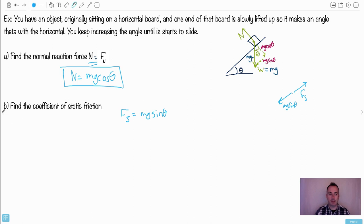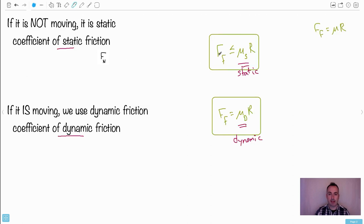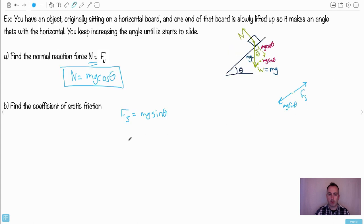But do you remember the equation for static friction? Static friction says that the Fs in this case would be mu s times the reaction force. So I know my static friction force is equal to the static coefficient of friction times the normal force, which in this case they called it N. We'll call it N then.